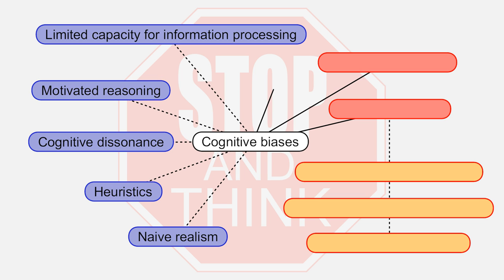Naive realism — psychological naive realism to be more specific, because there also exists philosophical naive realism — is a certain set of convictions that humans have about their own perception of reality. These convictions have been described by psychologists Lee Ross and Andrew Ward in such first-person terms. First, that I see entities and events as they are in objective reality, and that my social attitudes, beliefs, preferences, priorities and the like follow from a relatively dispassionate, unbiased and essentially unmediated apprehension of the information or evidence at hand.